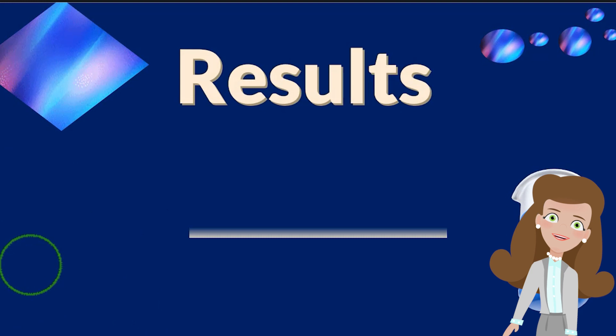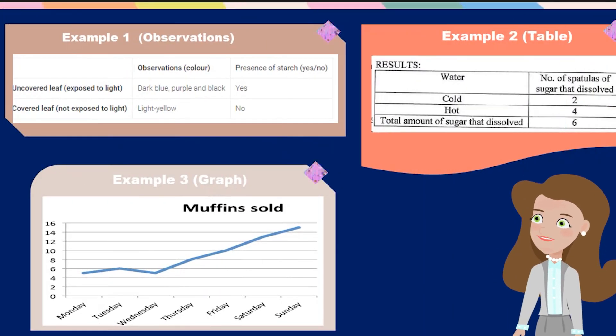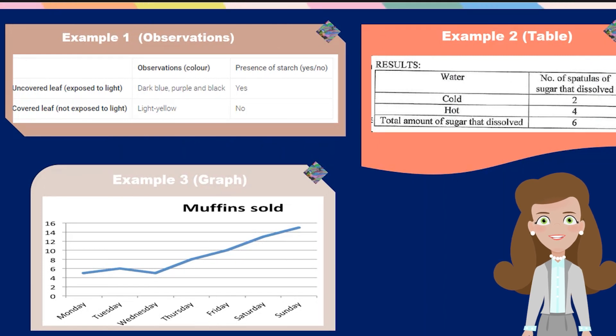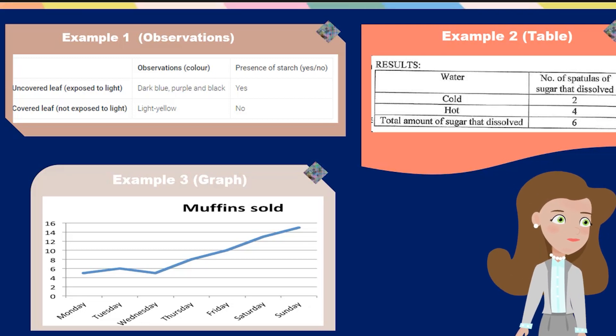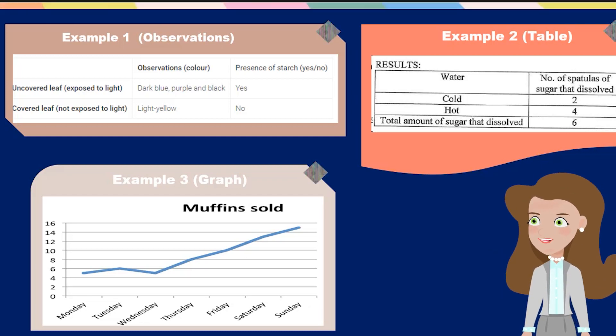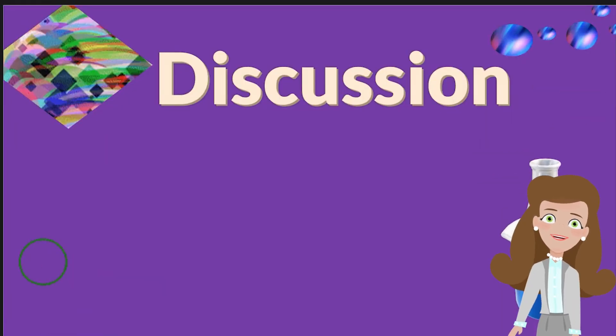Results are your next section, which are the measurements and observations. We can show the results in different ways. For example, example one has the results in your observations where you are just using your senses to describe what is happening. In example two, the results have been placed in a table. Example three, the results have been placed in a graph. So you can use graphs, tables, or observations to put in your results section.